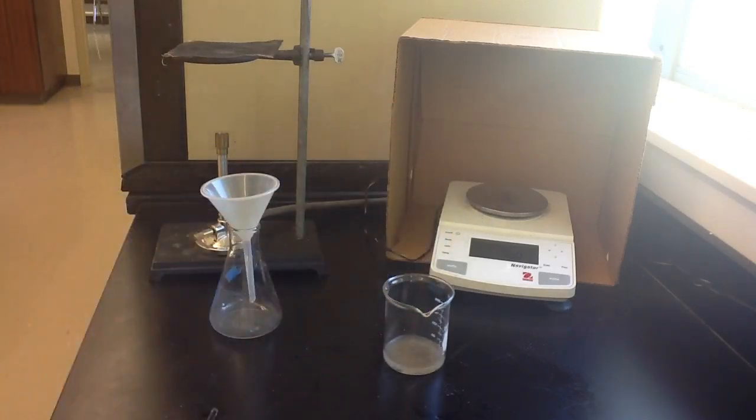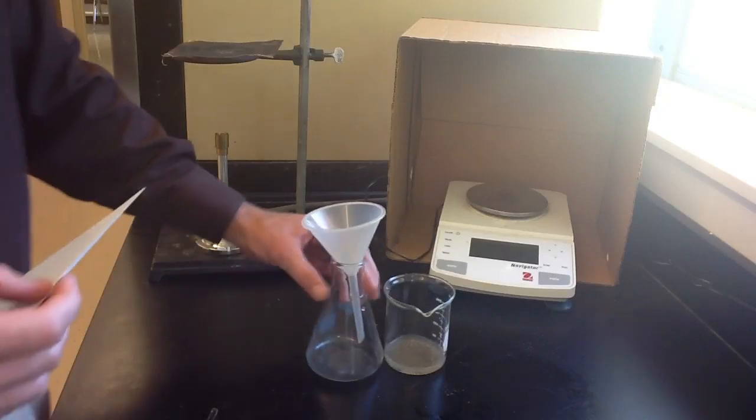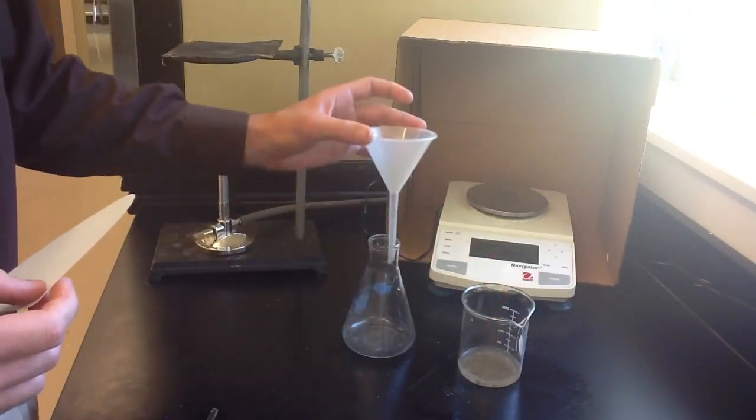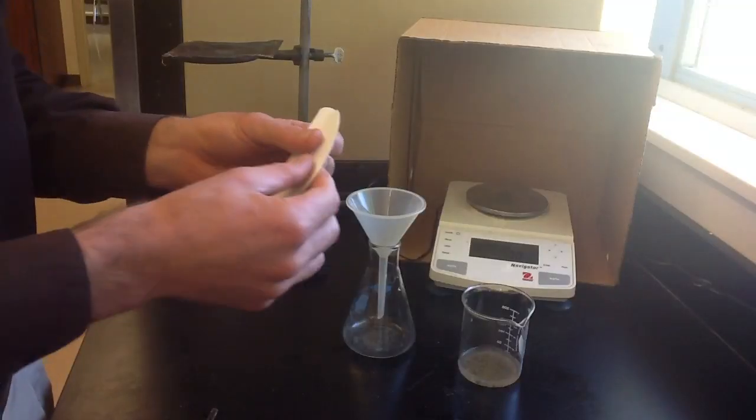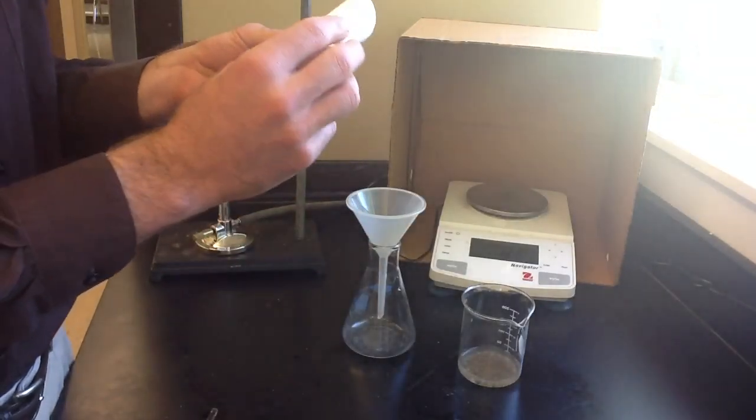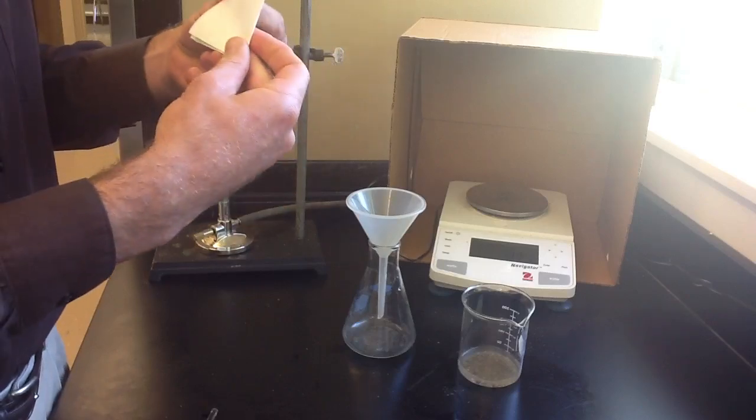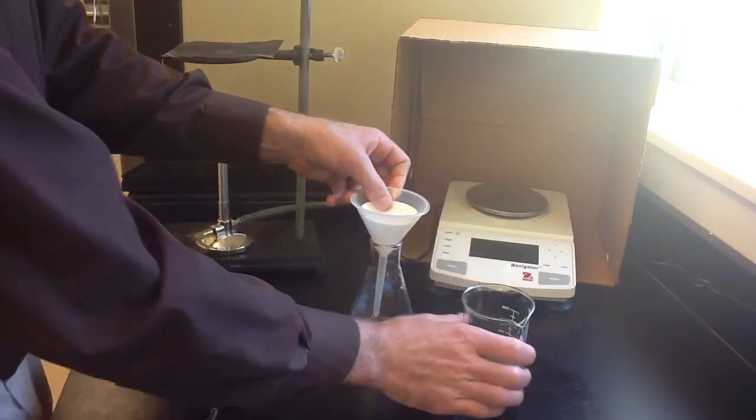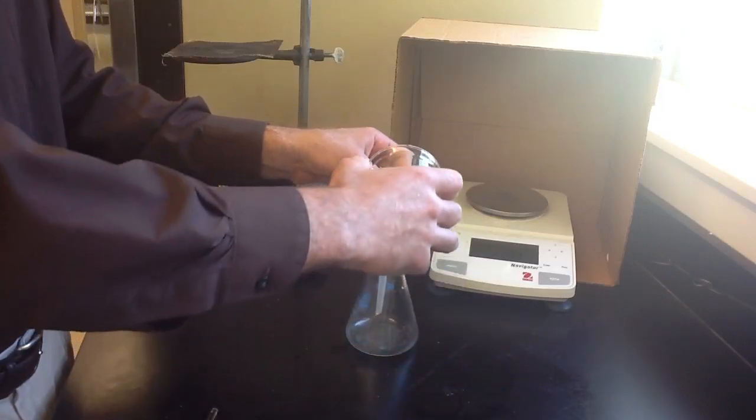Now to separate the salt water from the sand, we're going to use filtration. So we're going to set up the filtration apparatus right here. We have an Erlenmeyer flask and a funnel. And we'll take a piece of filter paper and we'll fold it to make a filter. And now we can pour the salt water through the filter.